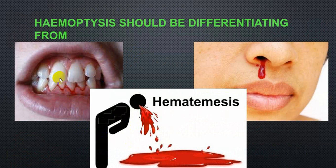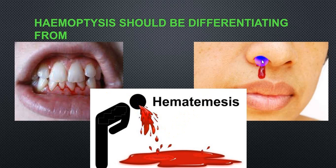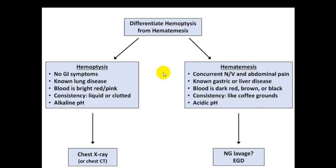You should be able to differentiate bleeding from gums, epistaxis, haematemesis, and haemoptysis. Haemoptysis is bleeding from the respiratory passage; bleeding from gums is from dental/gum etiology; haematemesis is vomiting of blood or presence of blood in vomitus; and epistaxis is bleeding from the nasal cavity. This differentiation is very frequently asked in short notes and oral exams, and you will face it in everyday practice.